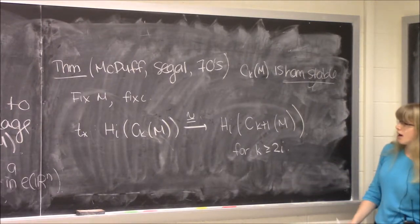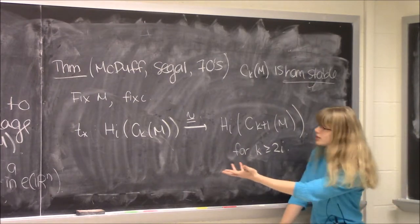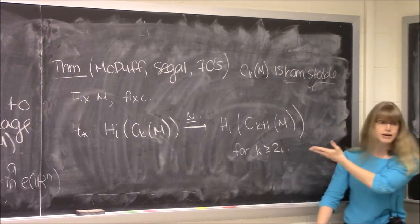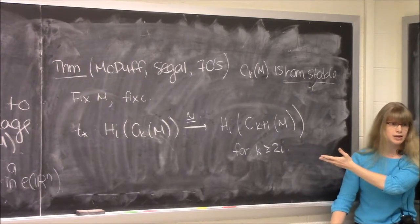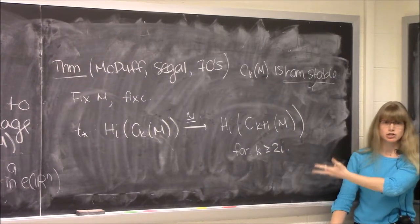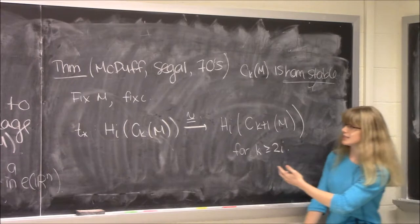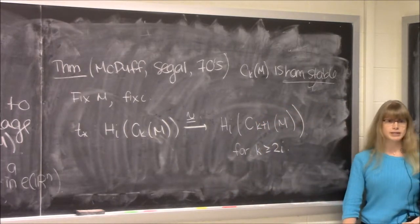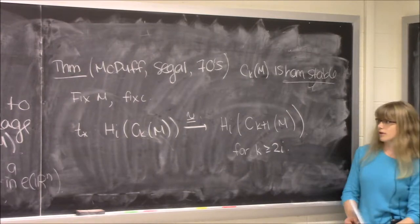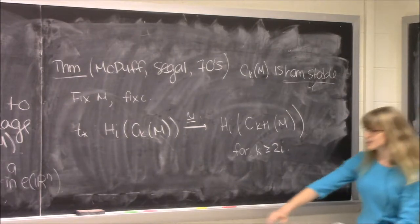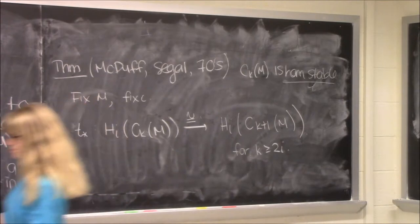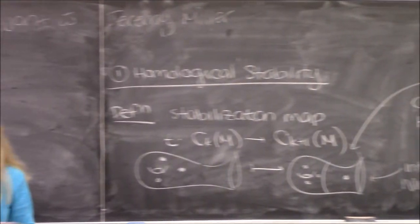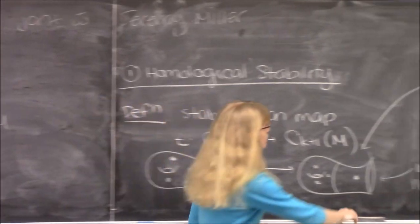Specifically, if you fix M and fix a homological degree i, the maps induced by the stabilization maps on degree-i homology are eventually isomorphisms — they're isomorphisms once k is at least twice the homological degree. So the degree-i structure of the configuration spaces stabilizes as k increases; these degree-i homology classes are coming from configurations on a relatively small number of points.